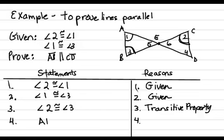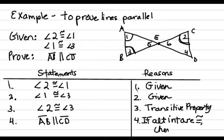AB is parallel to CD because if alternate interior angles are congruent, then the lines are parallel.